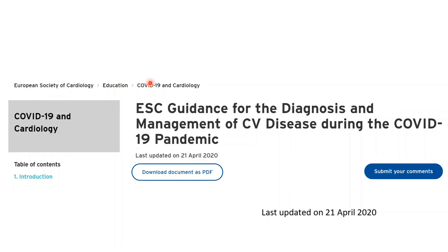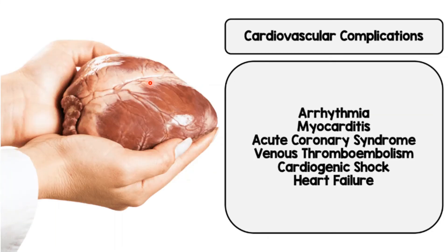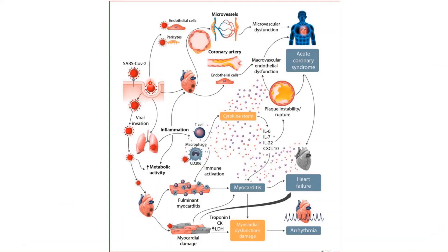The main cardiovascular complications in COVID-19 during the pandemic include arrhythmia, myocarditis, ACS, venous thromboembolism, cardiogenic shock, and heart failure. The proposed mechanism shows that the COVID virus can directly affect the endothelial cell. As part of the inflammation, you will have the cytokine storm, leading to fulminant myocarditis and myocardial damage — the reason for arrhythmia, heart failure, and ACS.